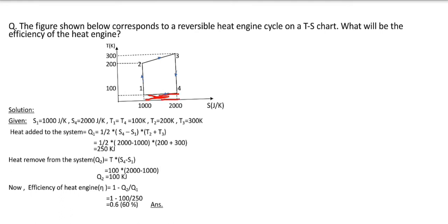After calculating the value of q2 and q1, simply just put it in the efficiency formula and you will get the value of efficiency of 60%.